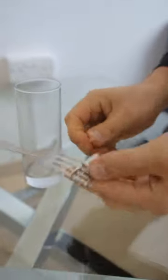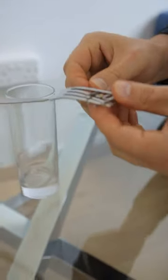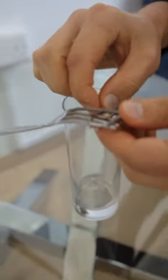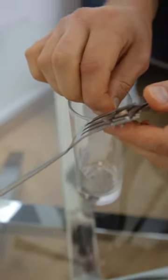Then, you take the whole construction and place it on the edge of the glass this way. The only tricky part here is balancing the two forks. Once it's done,